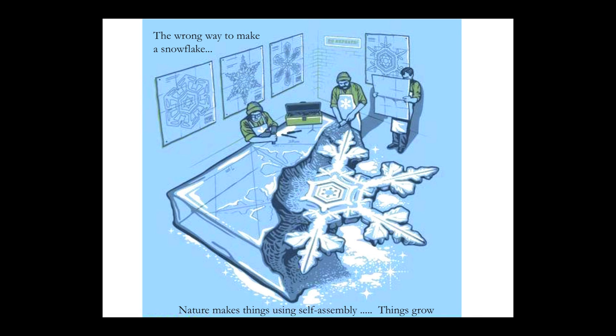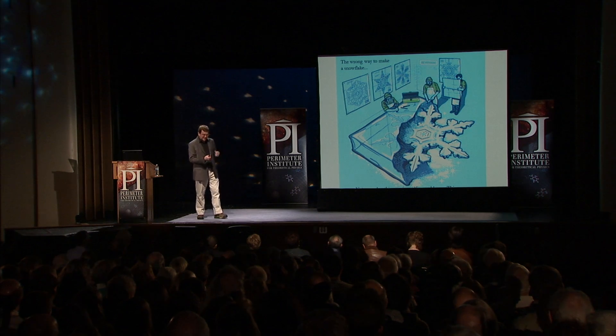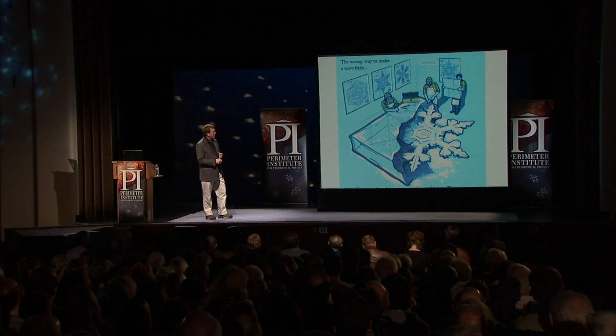Here's the wrong way to make a snowflake: we make things in factories — there are drawings, raw materials, and everything looks the same. But nothing is made this way in nature. When you make a tree, you plant a seed and it turns into a tree. In nature, things grow, and when they grow, they're forming by self-assembly. This is what crystals do — snow crystals grow, and that's one reason they all look different.